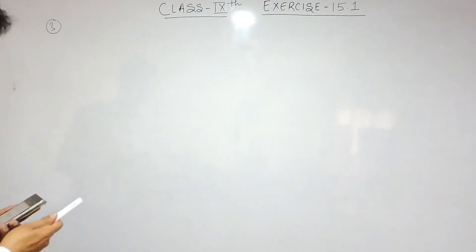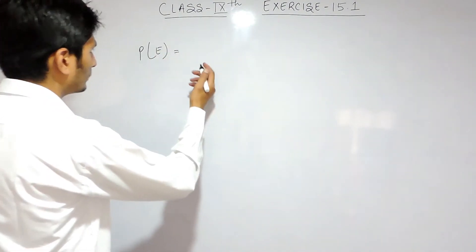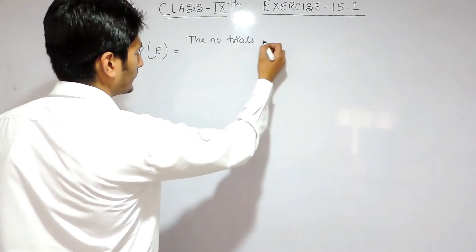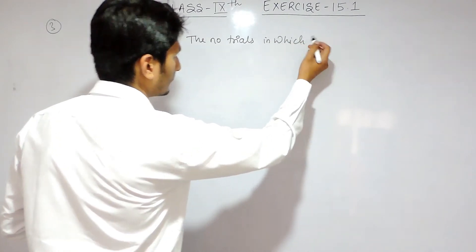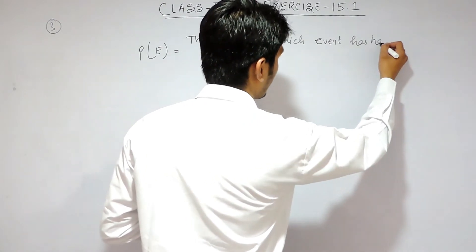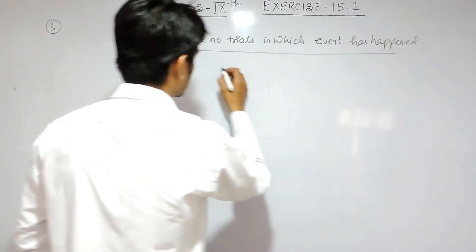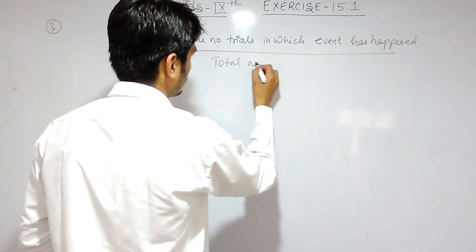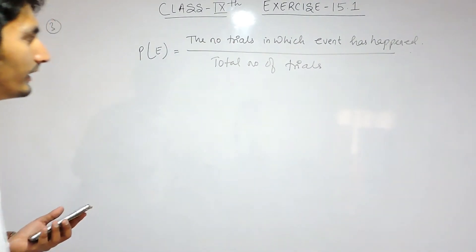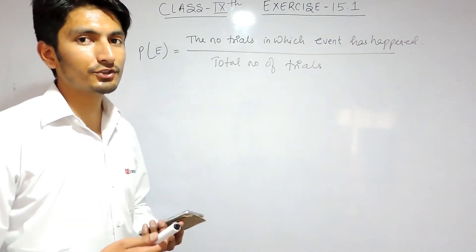The probability of an event is equal to the number of trials in which that event has happened divided by the total number of trials. So here in this question, the total number of trials is the total number of students.